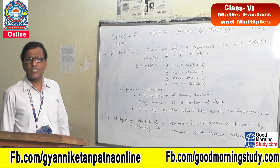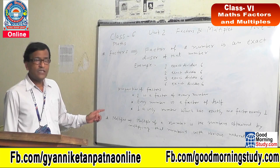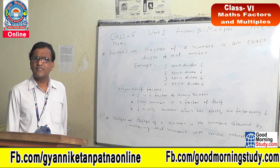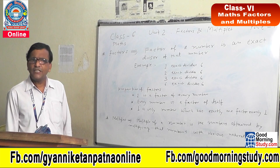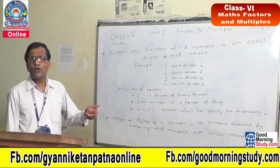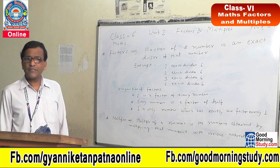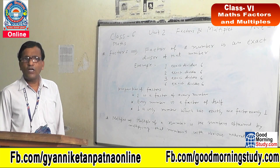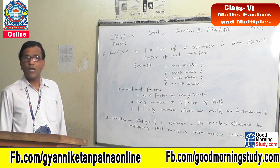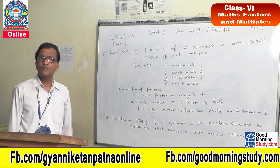Example: 6. Factors of 6 — 1 exactly divides 6, 2 exactly divides 6, 3 exactly divides 6, and 6 exactly divides 6. This means factors of 6 are 1, 2, 3, and 6. These are the factors of 6.